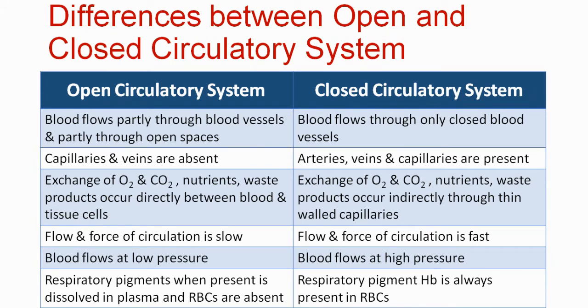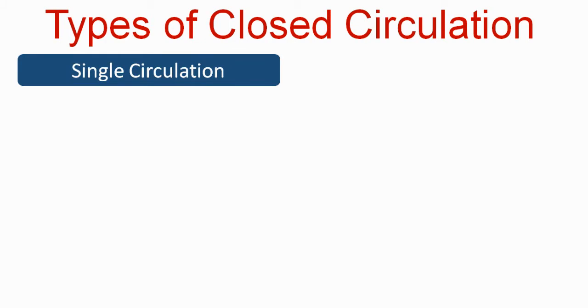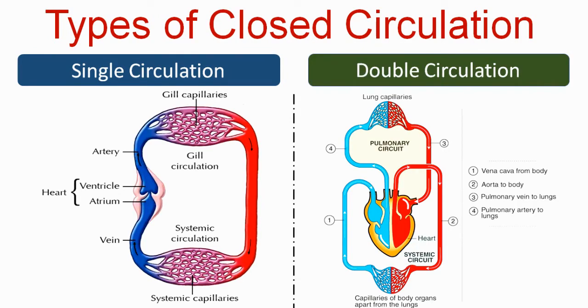The closed circulatory system is further divided into two types: single circulation and double circulation.